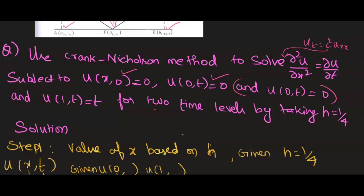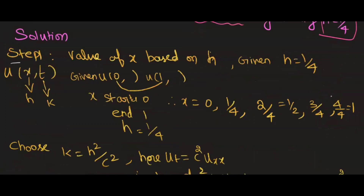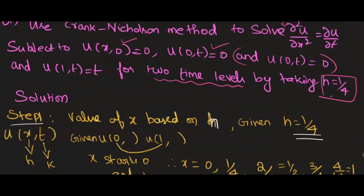They have given what h is, so we have to find k. Step 1: the value of x is based on h. We saw h = 1/4. What is the beginning value of x and the end value? Looking at the question: u(0, t) = 0 — this is the beginning value, so x starts at 0. And u(1, t) = t — this gives the end value, so x varies from 0 to 1.